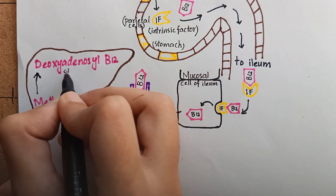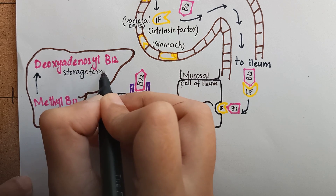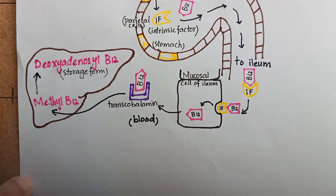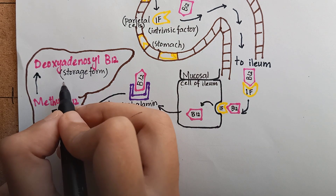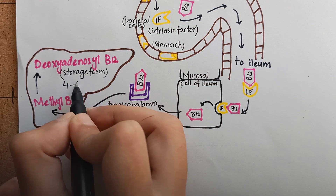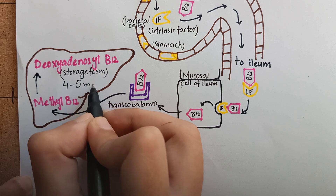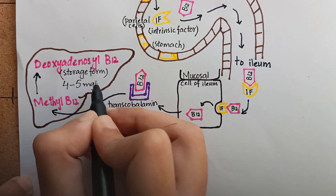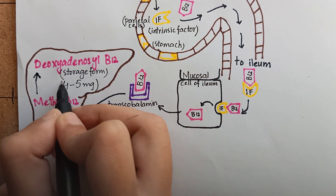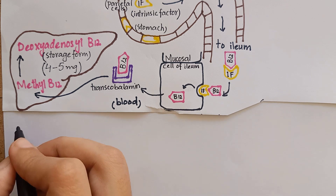As it is a water-soluble vitamin, our body can only store a small amount of cobalamin, that is 4 to 5 mg, and this amount is sufficient to meet the body's requirement for several years.